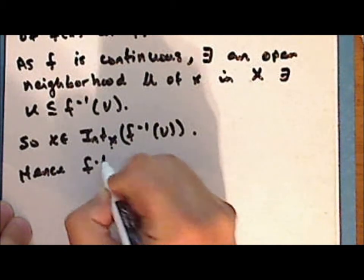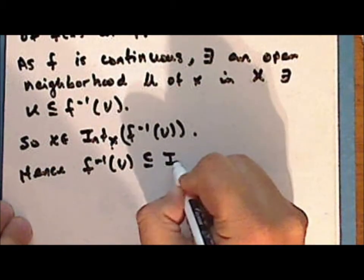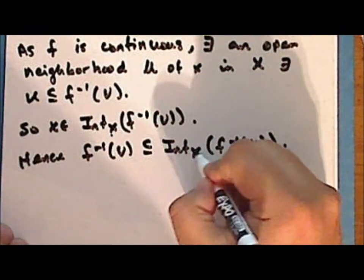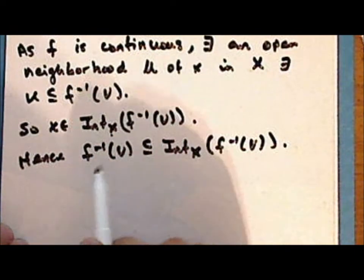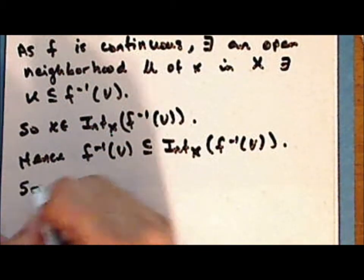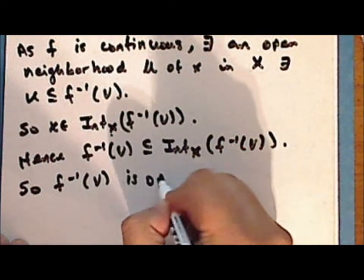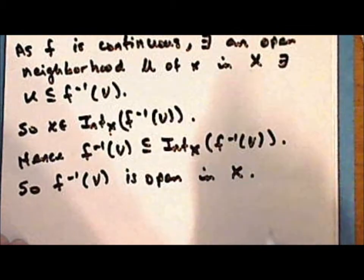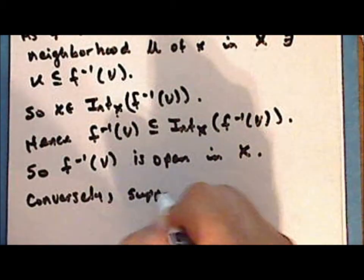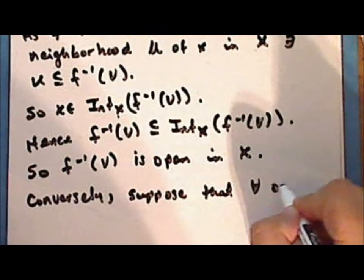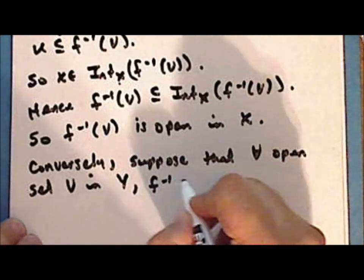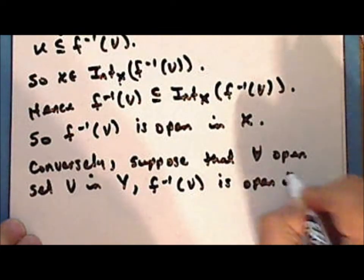And hence the inverse image of the set v is contained in its interior in the domain space x. And as the reverse inclusion is always true, we have that the inverse image of the set v is equal to its interior in the domain space x, and so the inverse image of v is open in the domain space x.